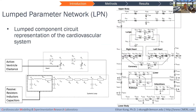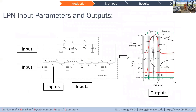Most of you have seen lumped parameter networks, LPN. These are essentially circuit models that represent the cardiovascular system. The LPN works by taking a circuit architecture with prescribed parameter values as inputs, and when you execute the model, it produces waveforms as outputs.